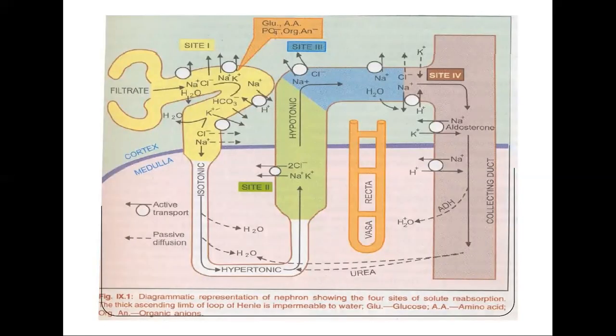This is a diagram showing the various sites of action of diuretics. Diuretics can act in four ways — Site 1, Site 2, Site 3, and Site 4.